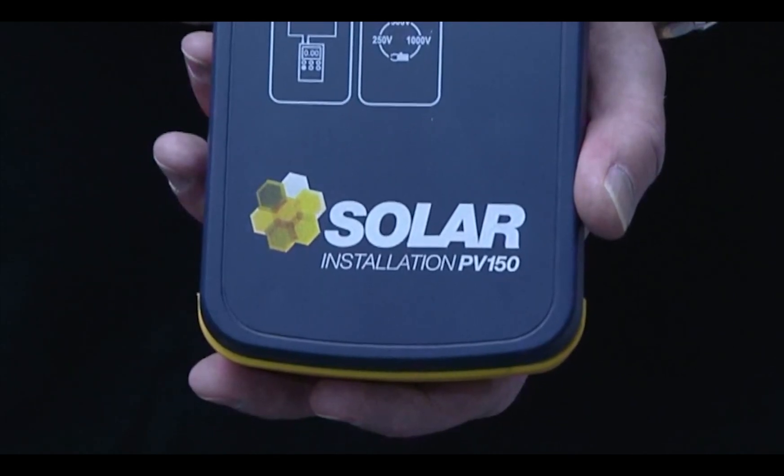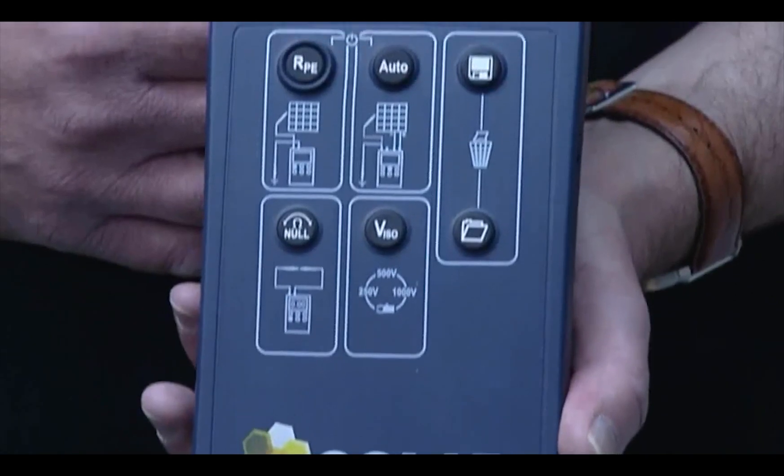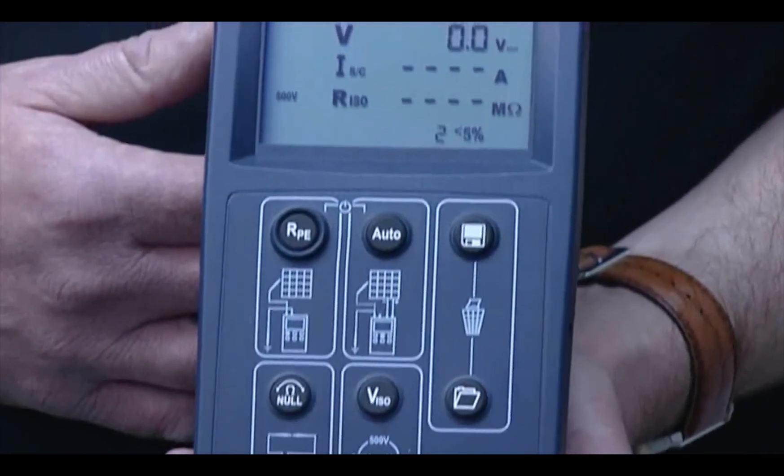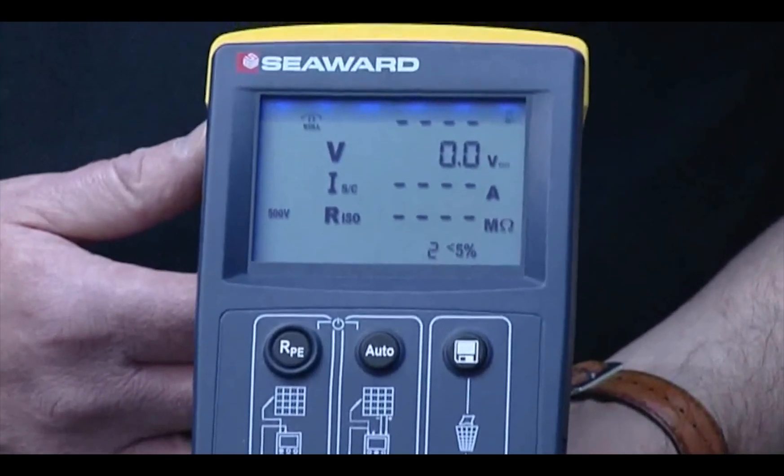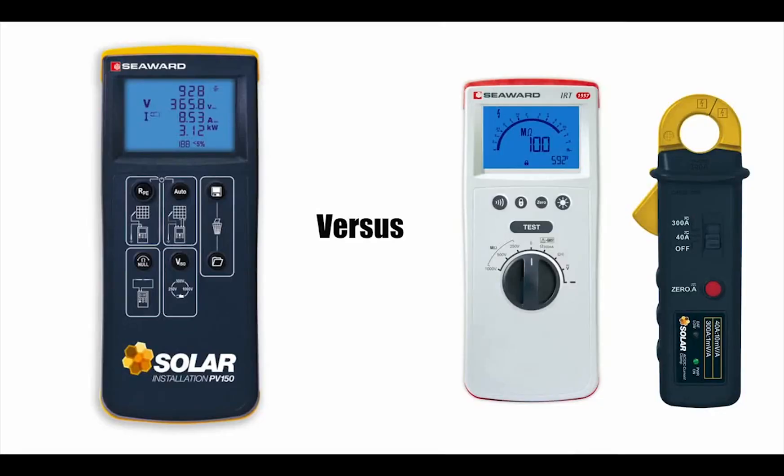The PV150 from Seaward revolutionizes PV testing. It's much quicker and easier than traditional testers. We'll put that to the test and compare the PV150 to the traditional method using an insulation tester and clamp meter. The clocks start.